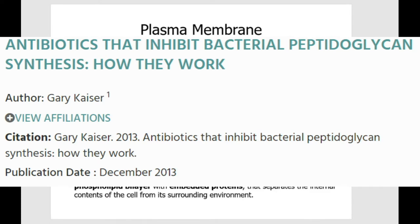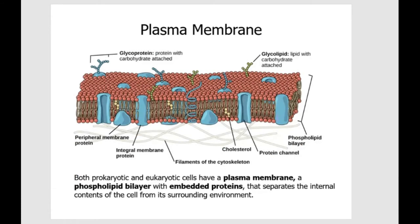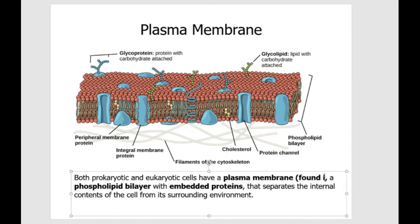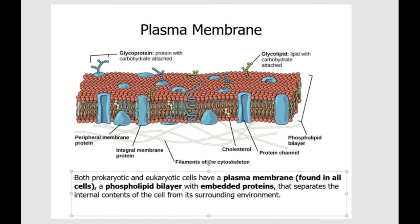Once you cross the cell wall, you are going to reach the plasma membrane — some people call it the cell membrane, which is the same thing. The cell membrane is very important and performs so many functions; it's not just the outer layer of the cell. We are going to have a chapter that really looks into the cell membrane, but here I'm just going to do a quick overview. All cells have a plasma membrane — it doesn't matter if you are a prokaryotic cell or a eukaryotic cell, everything has to have a plasma membrane.